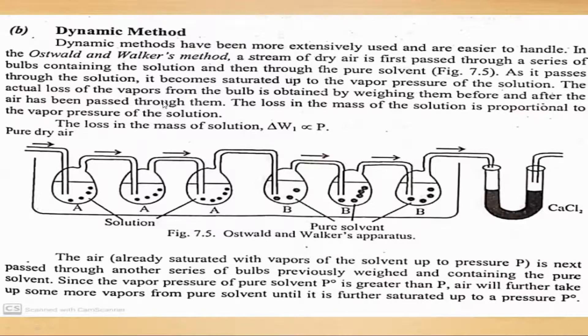The actual loss of the vapors from the bulb is obtained by weighing them before and after the air has been passed through them. This loss in the mass of the solution is proportional to the vapor pressure of the solution. So loss in mass of solution is proportional to P. What we do is dry air is passed through all of this.